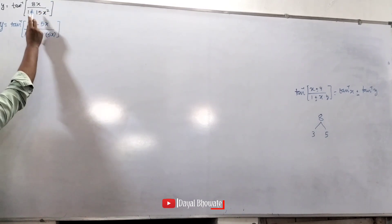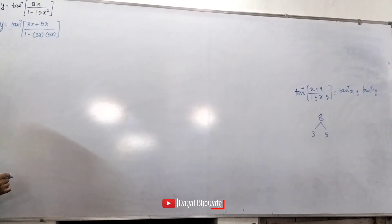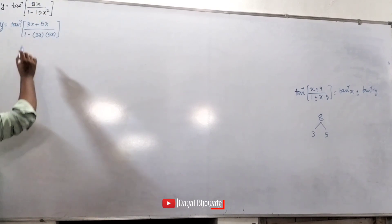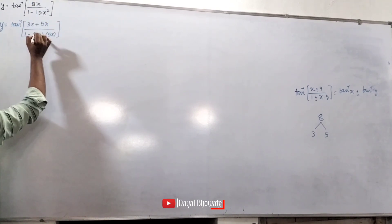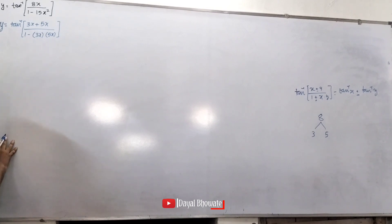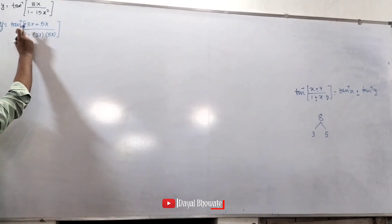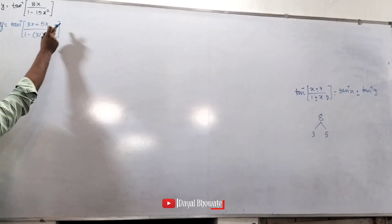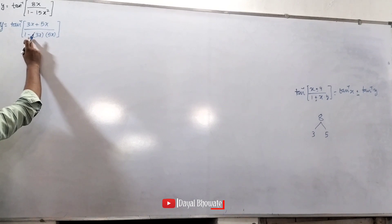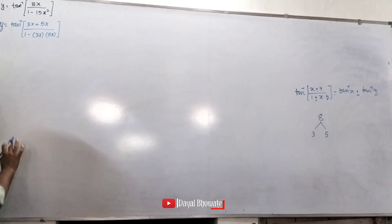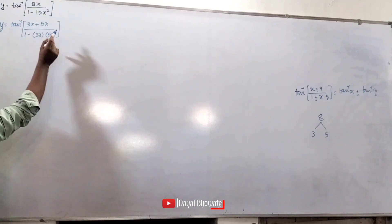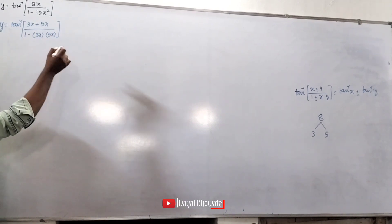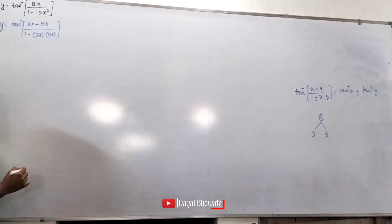3x plus 5x is 8x. Here, the two terms are split. Then the range of x plus 1 is 1 minus and 1. x plus tan inverse 1.